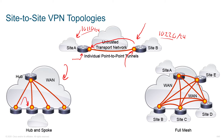If you have a lot of spoke-to-spoke communications and want the lowest latency and most efficient use of bandwidth, we can use a full mesh — where every site connects to every other site. The downside is that when you bring one new site online, you have to update all the other sites. Technologies like DMVPN help implement full mesh solutions and make it a lot less labor-intensive to manage.